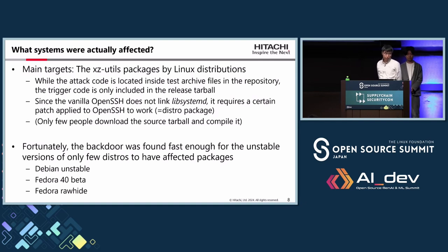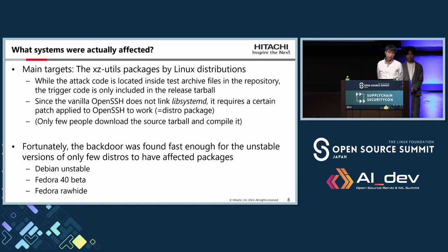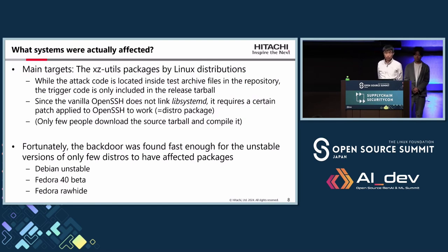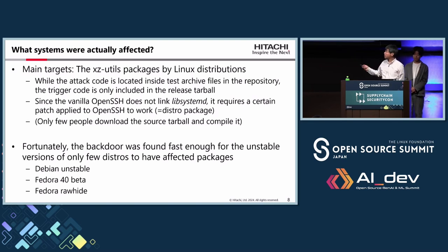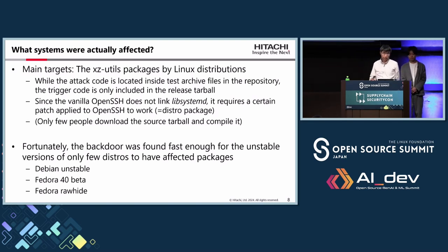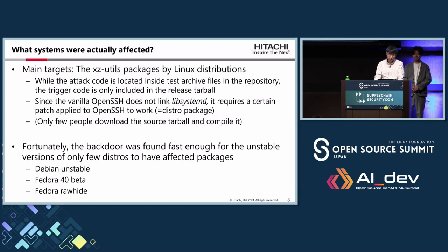Fortunately, this backdoor was found very quickly. Only some unstable versions of a few distributions published affected packages — like Debian unstable, Fedora Rawhide, and Fedora 40 beta. So you are unlikely to have this backdoor on your computers.